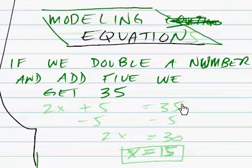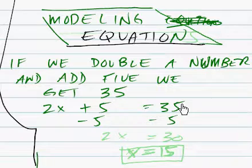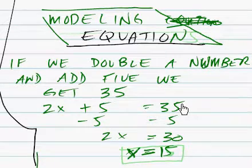So, the 'we get' phrase equals 35, and we're doubling a number, so 2x plus 5 equals 35. Well, that's pretty straightforward, so we're going to subtract the 5 on this side, subtract the 5 from that side, which gives us 30. 2x equals 30, which means x equals 15.